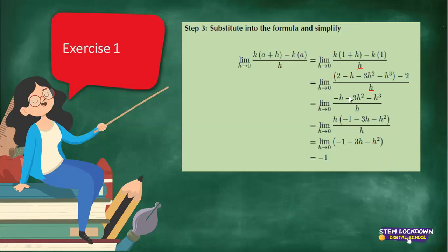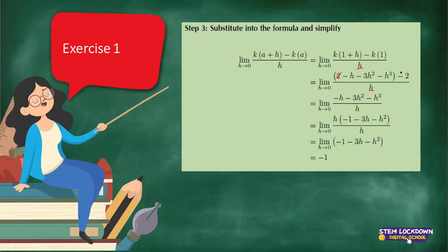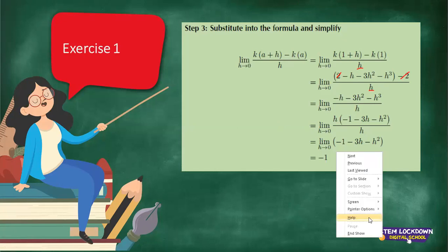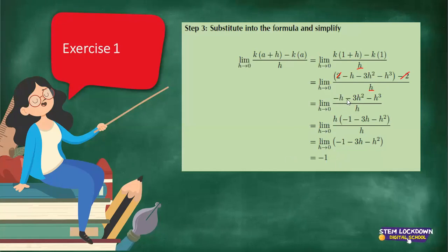Now you simplify — there's a positive 2, and that 2 will cancel the other 2, so you'll remain with the remaining terms. You have negative h minus 3h squared minus h cubed. You can make h a common factor, giving you h times (negative 1 minus 3h minus h squared). To check: h times negative 1 is negative h, h times negative 3h is negative 3h squared, and h times negative h squared is negative h cubed.